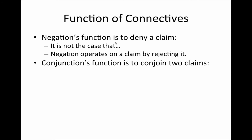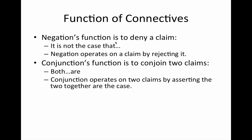The function of the conjunction is to conjoin two claims. Both are, for example. We often see A and B as an articulation of conjunction. Conjunction operates on two claims by asserting the two together are the case.